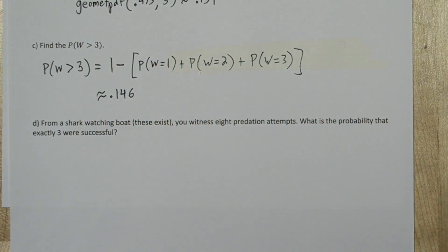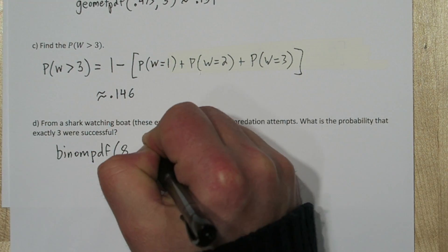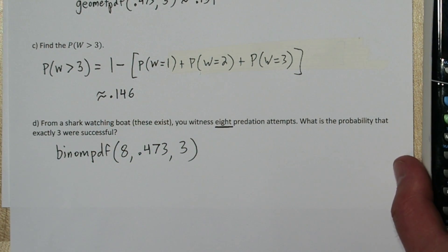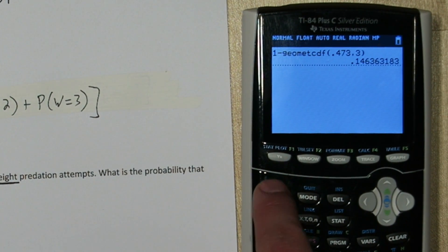Now we have a fixed number of trials, eight predation attempts. So now this is a binomial setting. The calculator can help us with this probability too.